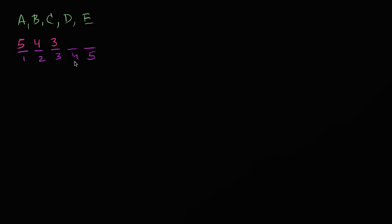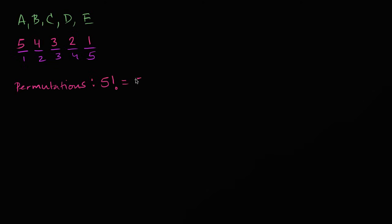How many people are left for seat four? Two people haven't sat down yet, so there are two possibilities. So now there are five times four times three times two scenarios for seating the first four seats. And for each of those, there's only one person left for the fifth seat. So the number of permutations of seating these five people in five chairs is five factorial — five times four times three times two times one — which equals 20 times six, which equals 120.